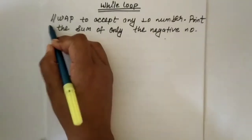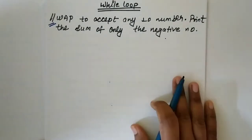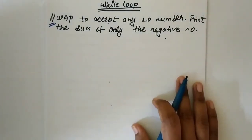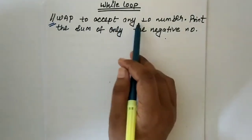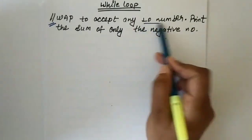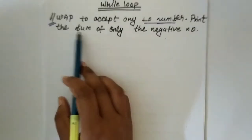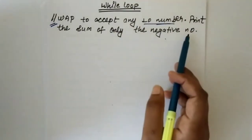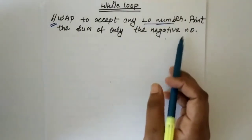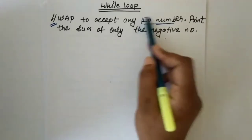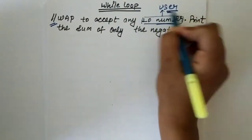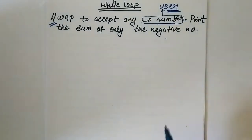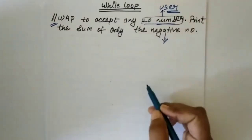So here we can take a program and solve it using a while loop. First, read the question. The question is: write a program to accept any 10 numbers from the user and print the sum of only the negative numbers.